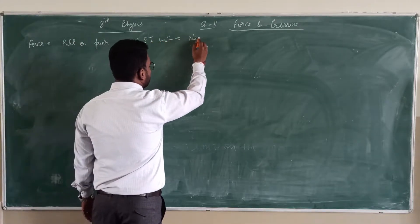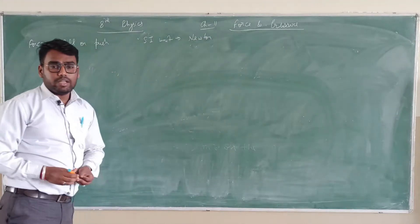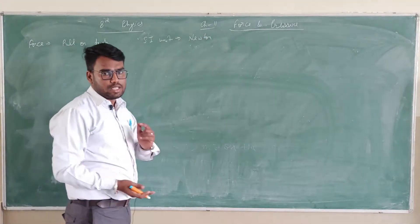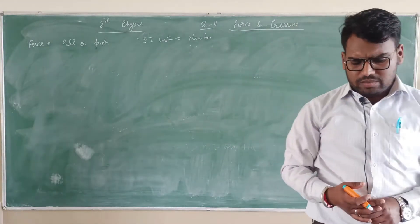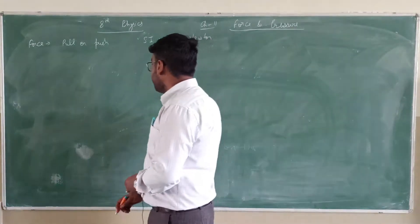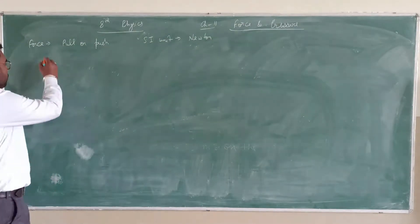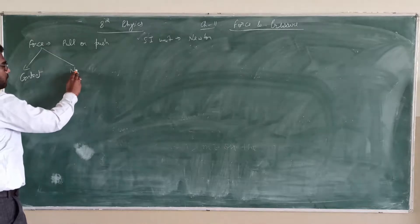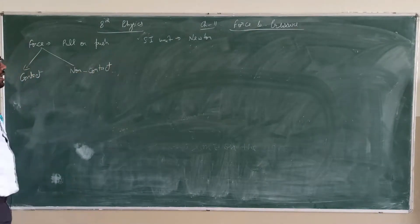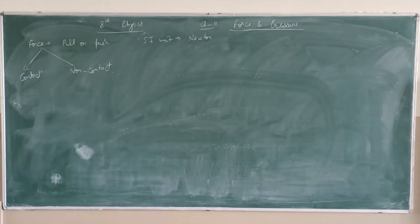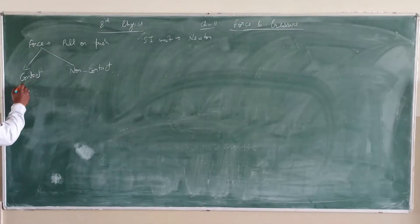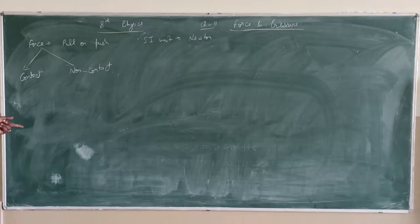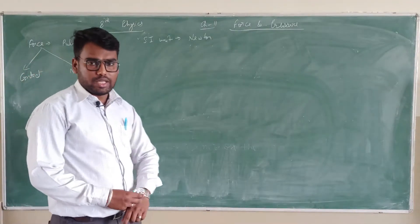After that we studied the effects of force: force can change the shape, the size, the state of rest or motion, and direction, speed, velocity — all these things we discussed already. After that we discussed the types of force. We have two types: one was contact force and the other was non-contact force. Contact force means when there is contact between two objects, and non-contact force means when there is no physical contact. Contact forces are of two types: muscular force and frictional force.